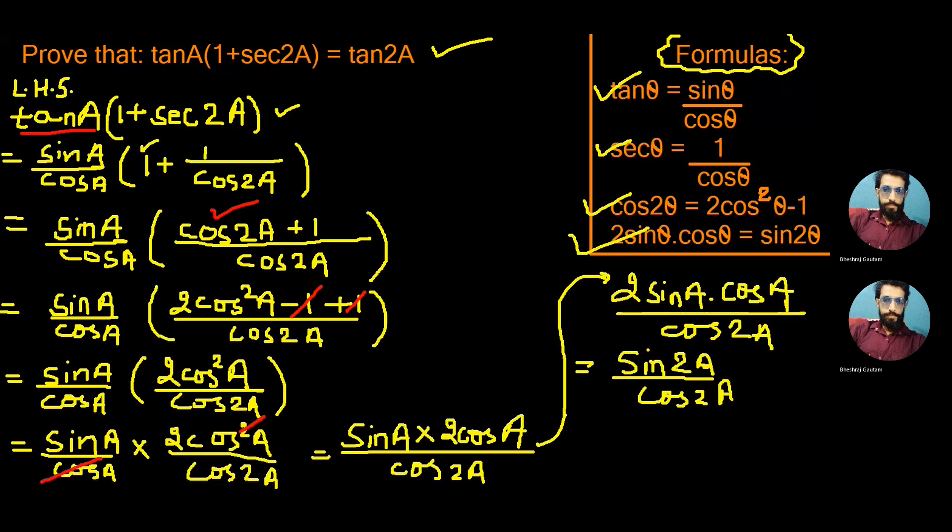And finally, this can be written as tan 2A from the same formula tan θ is equal to sin θ by cos θ. Hence, LHS and RHS are equal.